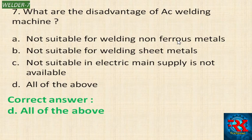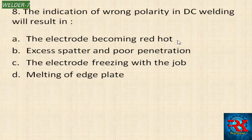The indication of wrong polarity in a DC welding machine will result in: the electrode becoming red hot, excess spatter and poor penetration, the electrode freezing with the job, or melting off the edge plate.